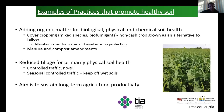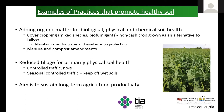Moving on to some basic practices that promote healthy soil: the addition of organic matter is one of those practices, and in most cases that's via the use of cover cropping — a non-cash crop grown as an alternative to fallow. We cover the soil surface with a crop to protect it from wind and water erosion. We can also add organic matter by adding manure and compost amendments. Reducing tillage is also an important component, as is keeping off wet soils.